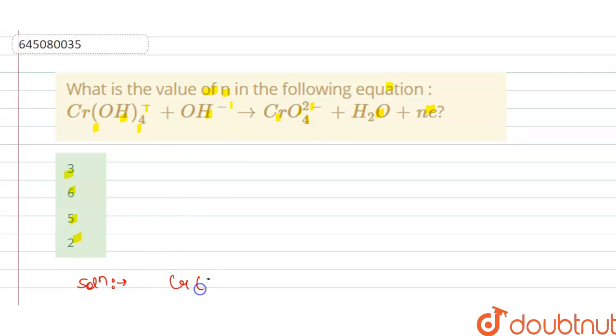We write this reaction: Cr(OH)4^- + OH^- gives CrO4^2- + H2O + ne^-, where n is the number of electrons.